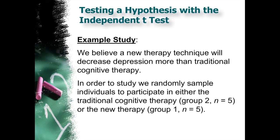Okay, so let's take a look at this. So we believe a new therapy technique will decrease depression more than traditional cognitive therapy. In order to study this, we randomly sample individuals to participate in either the traditional cognitive therapy group of 5 people, or this new therapy, maybe it's cognitive behavioral therapy. Each group has 5 people that are participating in the study.